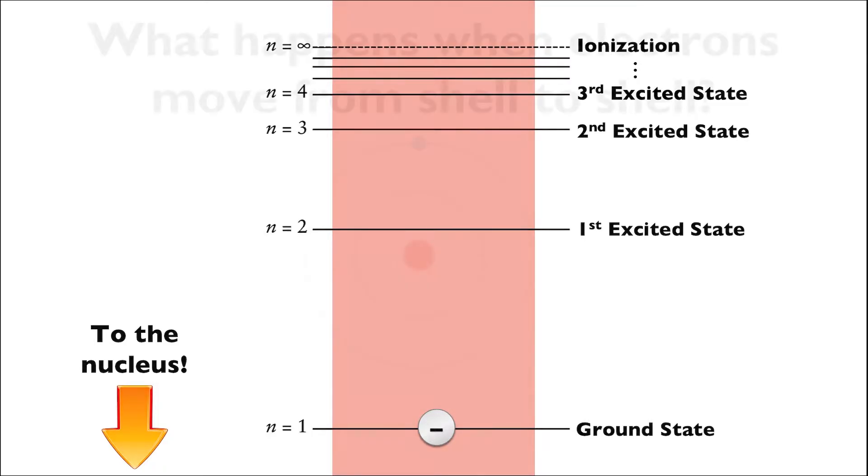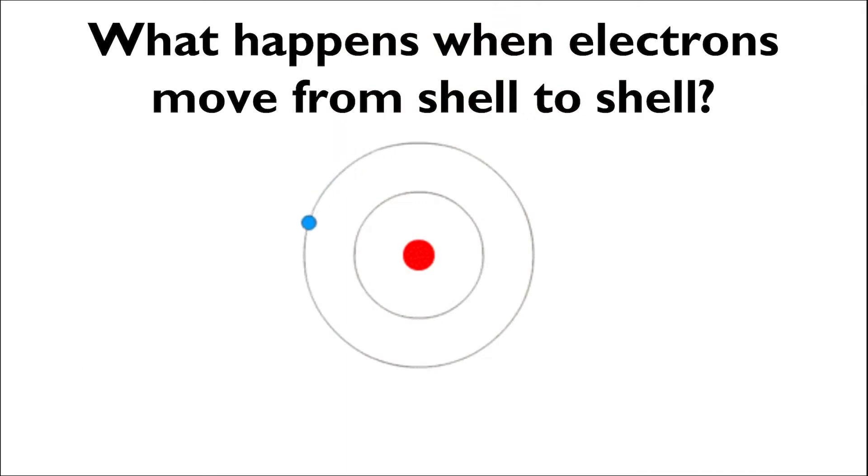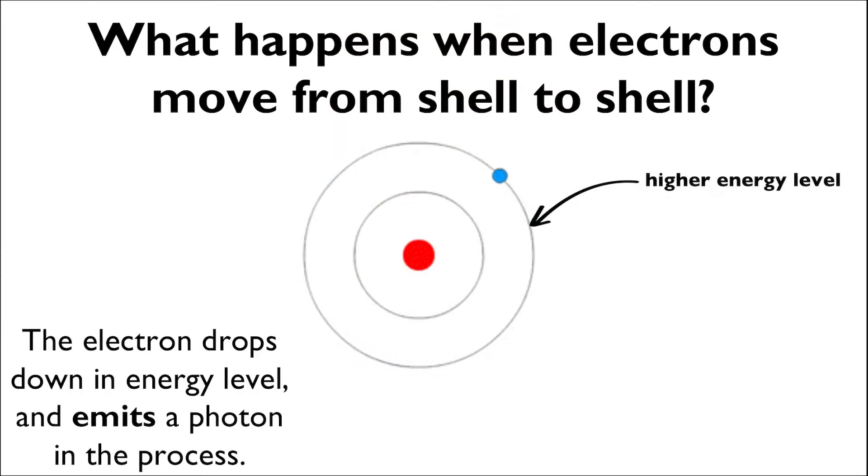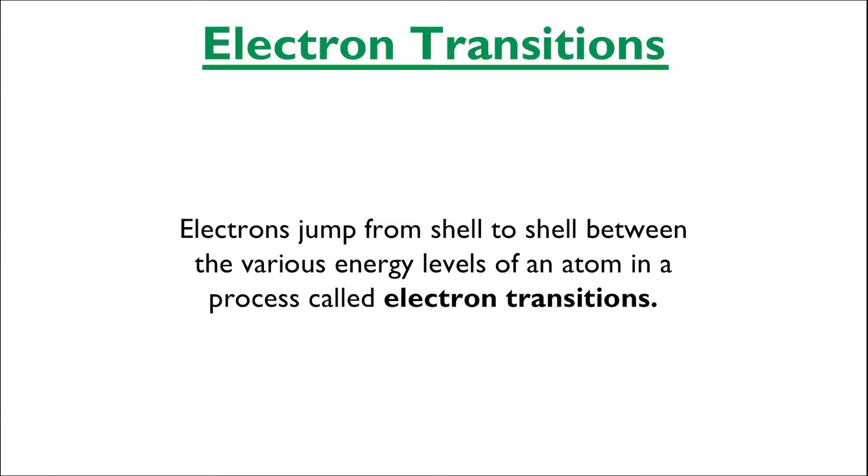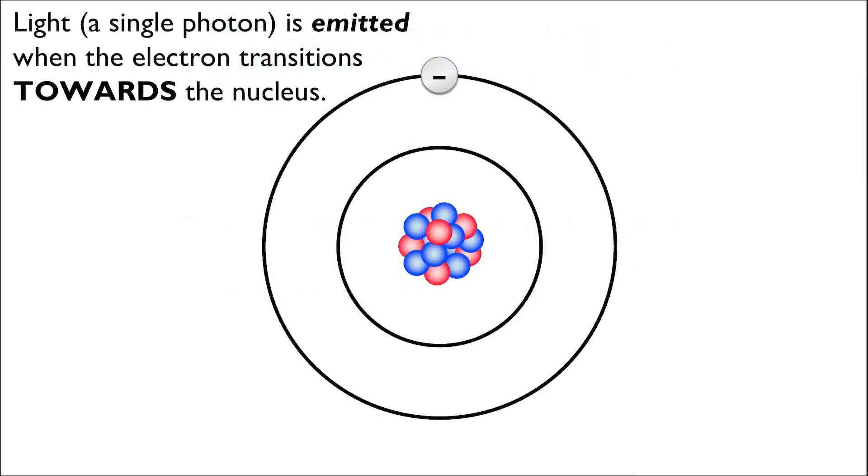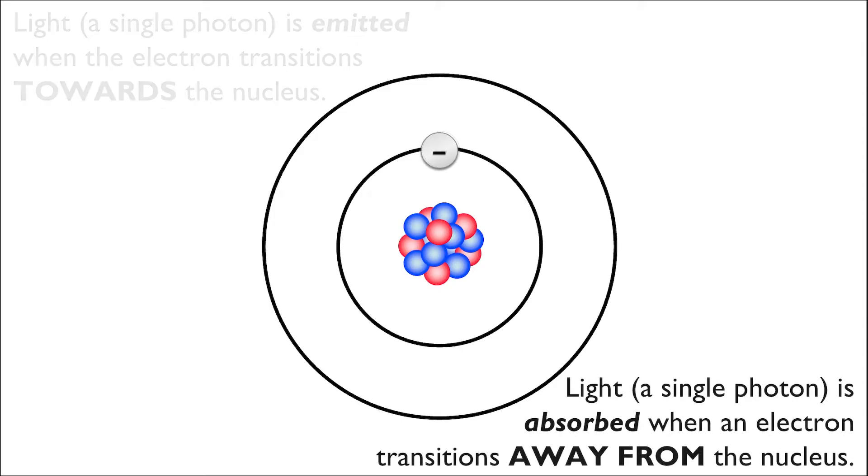But what happens when electrons move from shell to shell in an atom? On one hand, the electron can drop down in an energy level, emitting a photon in the process. But on the other hand, the electron can also absorb an incoming photon, and it will jump to a higher energy level as a result. These sorts of jumps between the various shells in an atom are called electron transitions. The atom emits a photon of light if its electron jumps down towards the nucleus. Similarly, incoming photons are absorbed by the atom when electrons transition away from the nucleus, jumping from a lower energy level to a higher one.